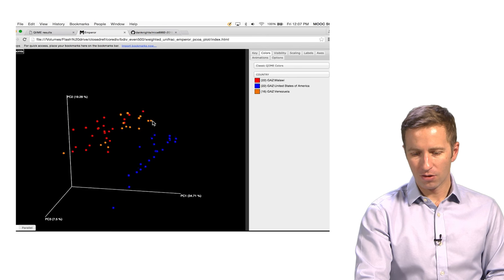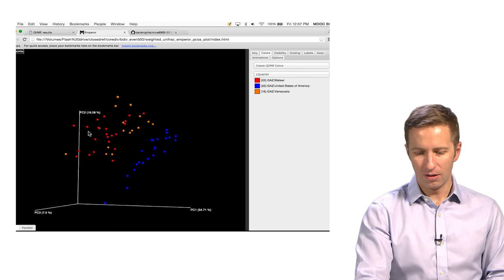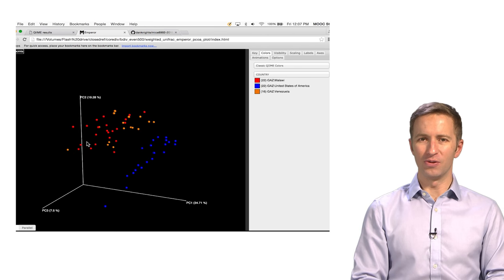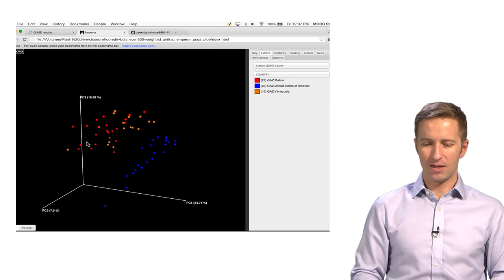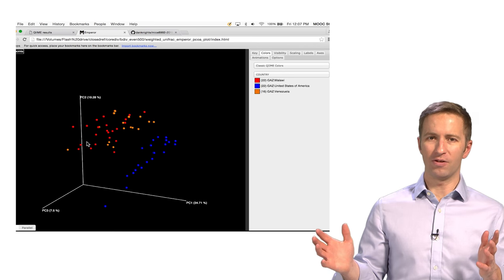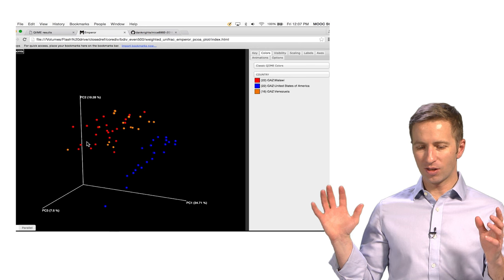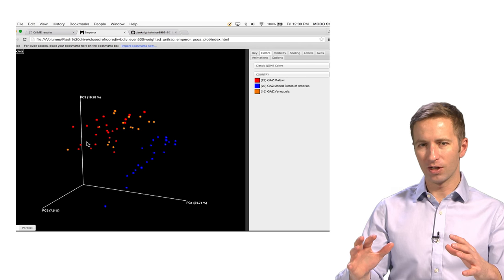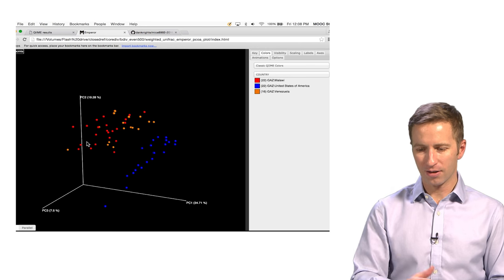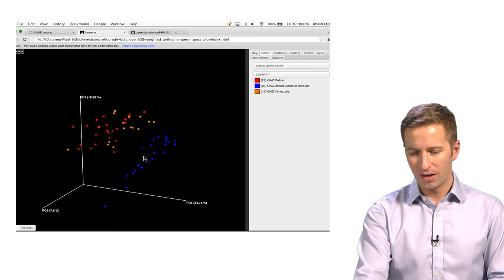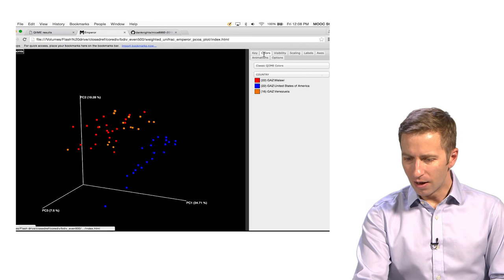So this is the best that we can do to visualize the whole beta diversity matrix. Find some way to project it down into two or three dimensions and then show that on a computer screen or a piece of paper.